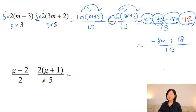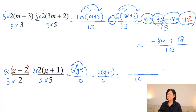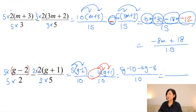The next one: our common denominator is 10, so multiply by 5 on both numerator and denominator. Always use brackets when you multiply two terms. Simplify to get (5g − 2)/10 − (4g + 1)/10. Expand the brackets: 5g − 5 − 10, and distribute −4, giving −4g − 4. Collecting like terms: 5g − 4g = g, and −10 − 4 = −14. Excellent.